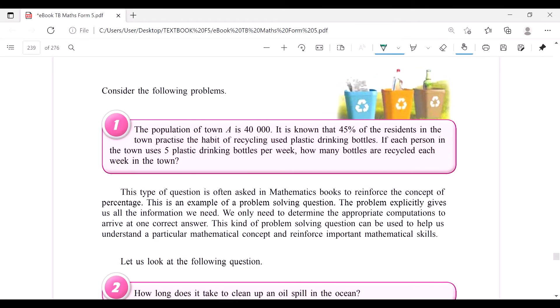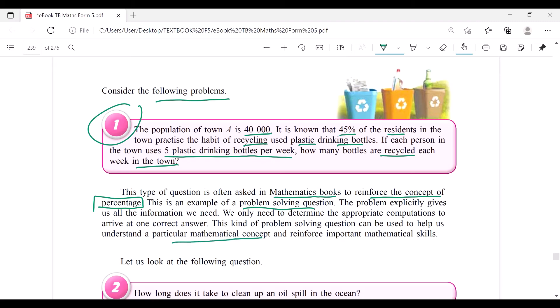Let's consider the following problem. Number one: The population of a town is 40,000. 45% of the residents in the town practice the habit of recycling. It's good, use plastic drinking bottles that is recycled. If each person in the town uses five plastic drinking bottles per week, how many bottles are recycled each week in the town? This type of question is often asked in math books to reinforce the concept of percentage. This is a problem solving and you can easily get the answer. You can get the answer and you use the mathematical concept or any formula and you can get it.